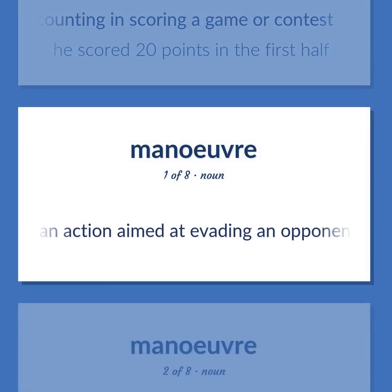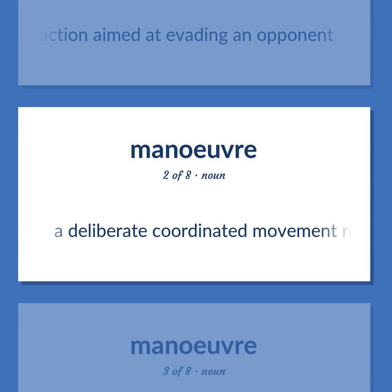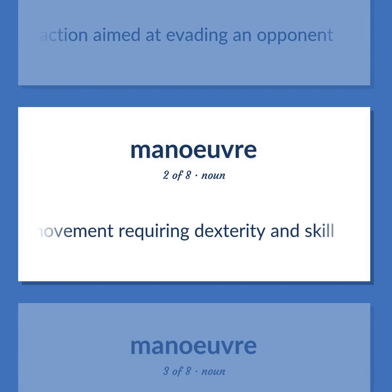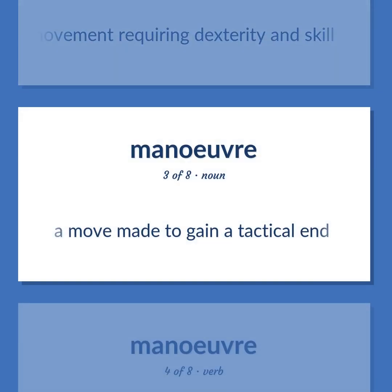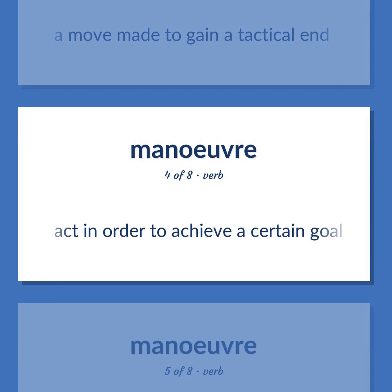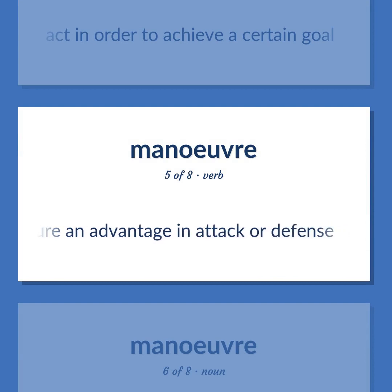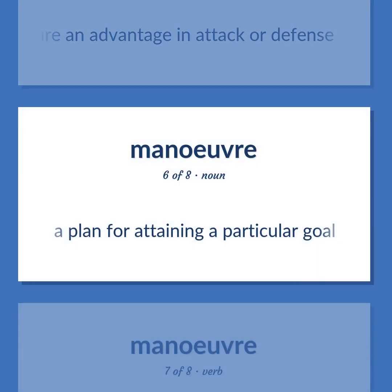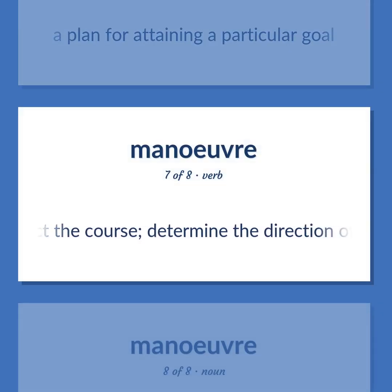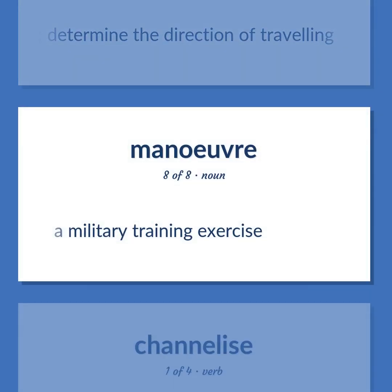An action aimed at evading an opponent. A deliberate coordinated movement requiring dexterity and skill. A move made to gain a tactical end. Act in order to achieve a certain goal. Perform a movement in military or naval tactics in order to secure an advantage in attack or defense. A plan for attaining a particular goal. Direct the course; determine the direction of traveling. A military training exercise.